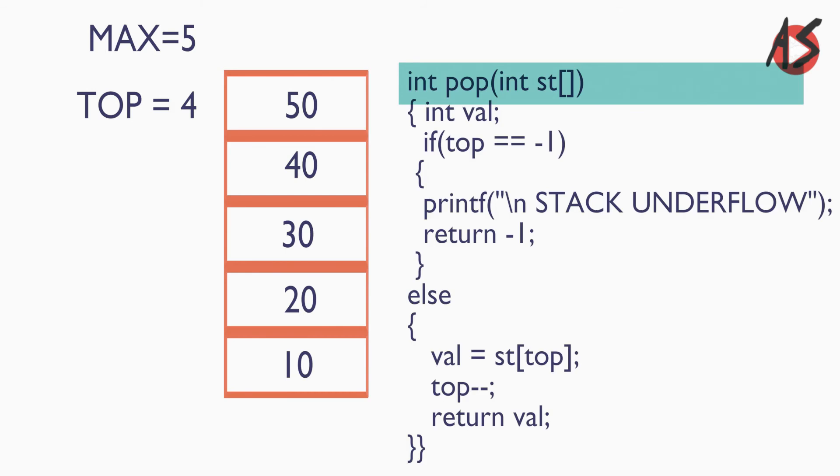Now if we want to pop the element from the stack, we will take one variable to store the value. Here our top is on the fourth position. Top equals minus 1 condition becomes false, so we jump onto else part where we pop up the topmost element and store 50 in variable val. Now the top is decremented to 3.